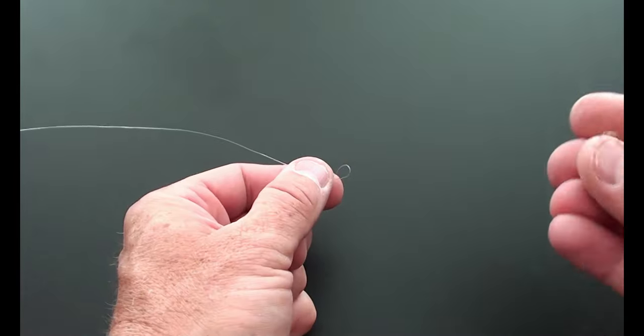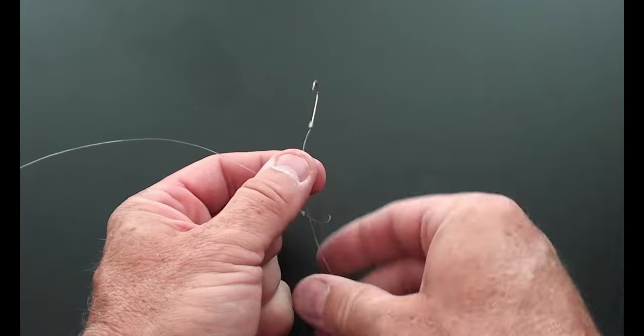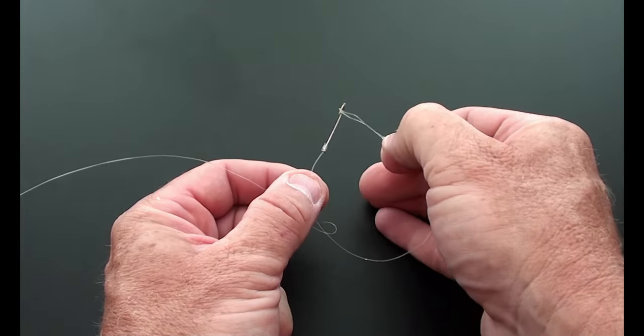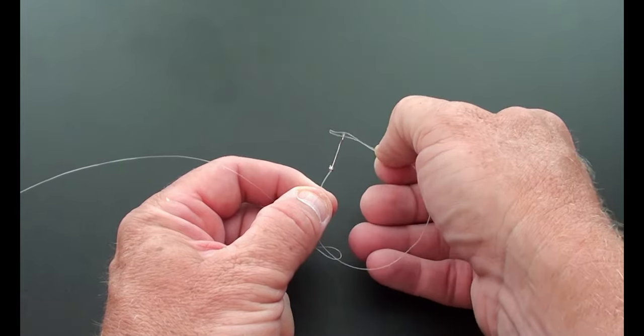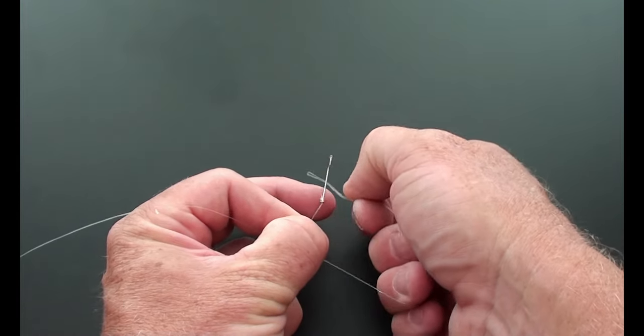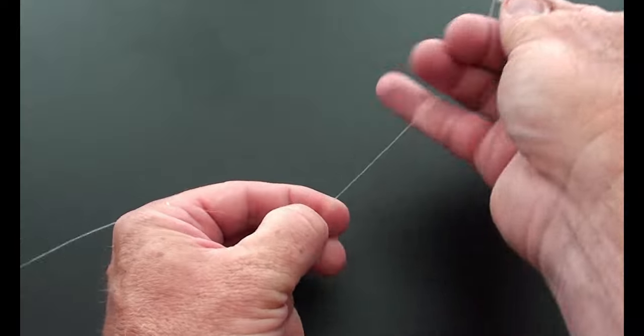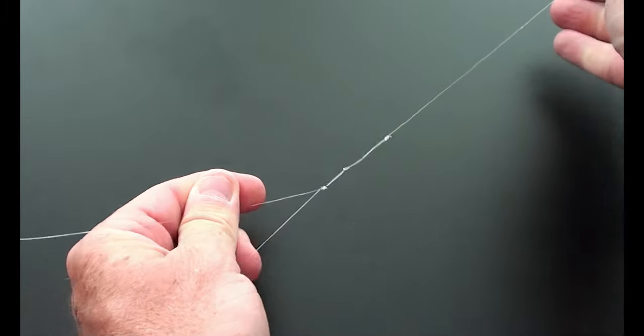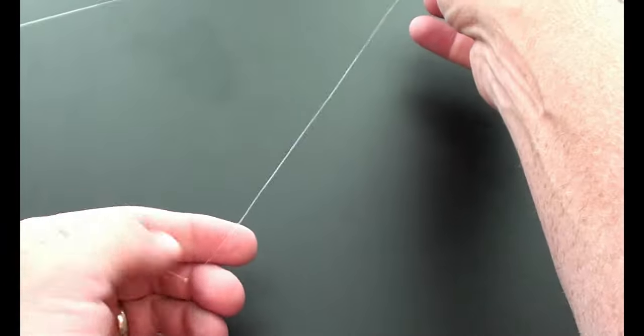Finally, to attach the snell hook, we're simply going to run the hook through the loop that we made and then run the hook back through the loop that's at the end of the snell hook and cinch it down. And that's all there is to this. I found these to be just as effective as the store-bought rigs, but one of the biggest advantages with these is how you store them, which we'll go over next.